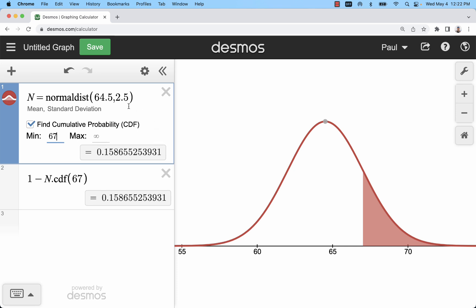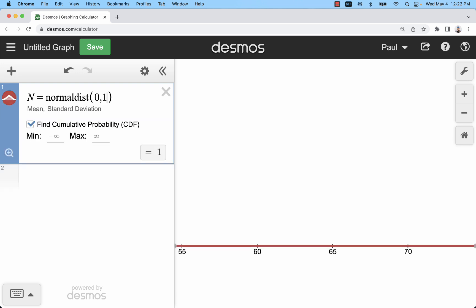And then the other use for all of this is using the inverse cdf. So I'm actually going to go back to a mean of zero and a standard deviation of one. I'm going to use the inverse cdf.